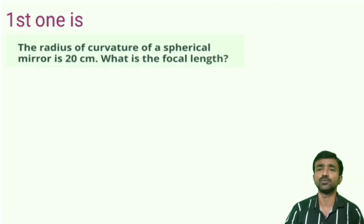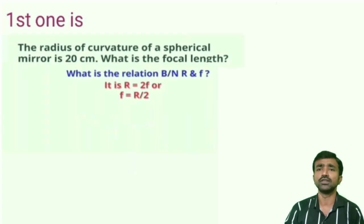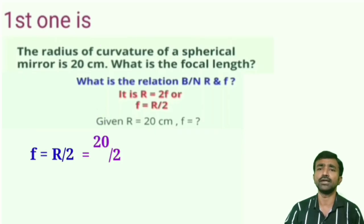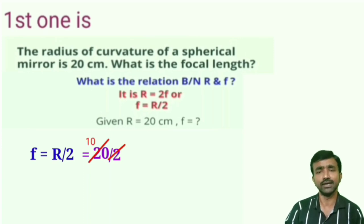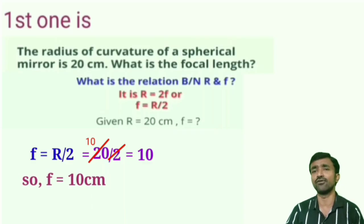To find the focal length, note down the given values. The relation is R equal to 2F, which we can transpose to F equal to R by 2. Given R equal to 20 centimeters, substitute to get F equal to 20 by 2. Cancelling gives 10, so F equal to 10 centimeters.